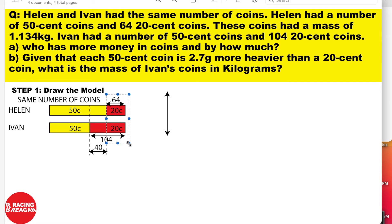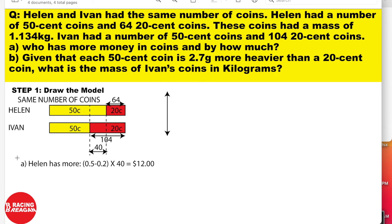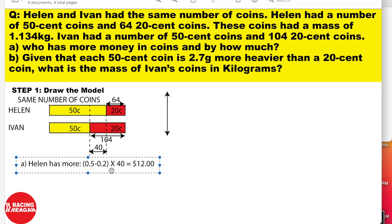Since this small part is now 64, we make the 20-cent parts equal so we can cancel them out — and the 50-cent parts are also equal, so we can cancel those too. We're left with 40 extra coins. You get 40 by taking Ivan's 104 twenty-cent coins minus Helen's 64, which gives 40. Since Helen has more 50-cent coins, Helen has more money. To find by how much: take (0.50 − 0.20) × 40 = $12. That's Part A done.